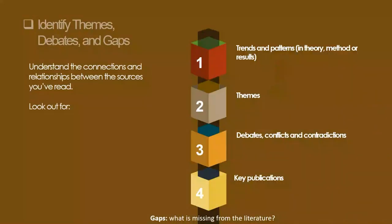To begin organizing your literature review's argument and structure, you need to understand the connections and relationships between the sources you've read. Based on your reading and notes, you can look for trends and patterns — in theory, method, or results. For example, most studies that looked at intimate partner violence used a behaviourist approach; however, Ismail and Talib and Makanya and Bata looked at it from a masculinity or gendered perspective using critical theory. That is how you show trends and patterns in terms of theory.